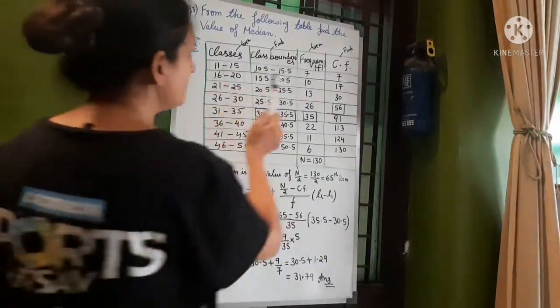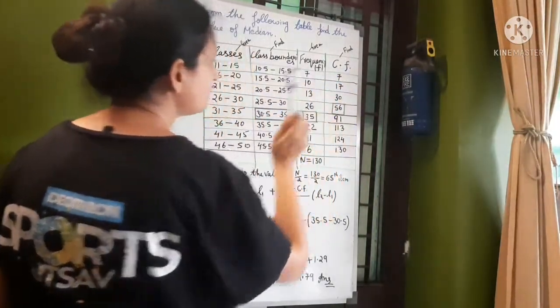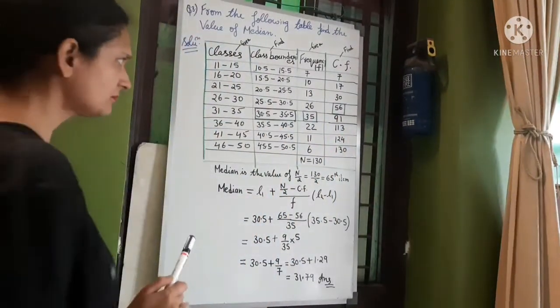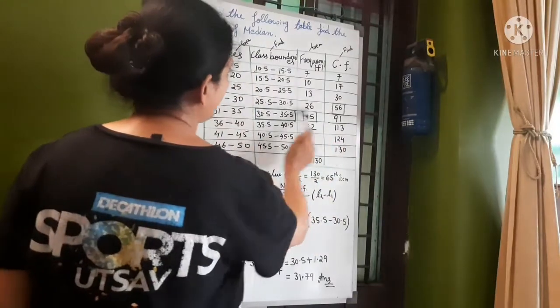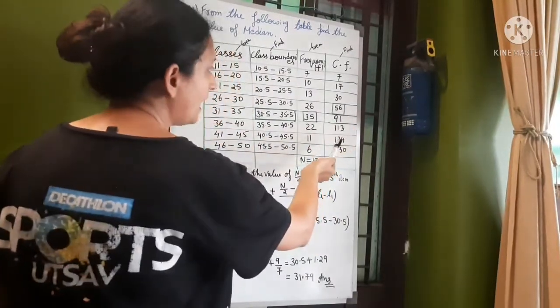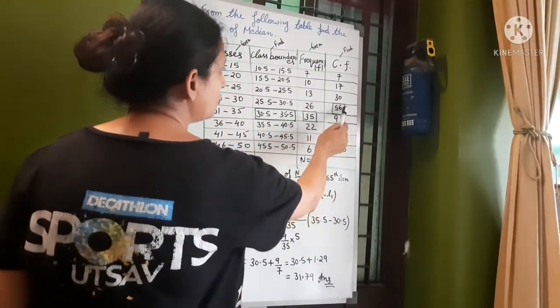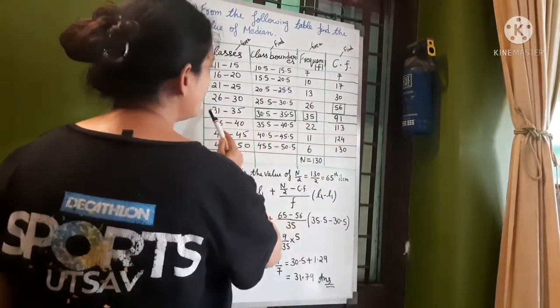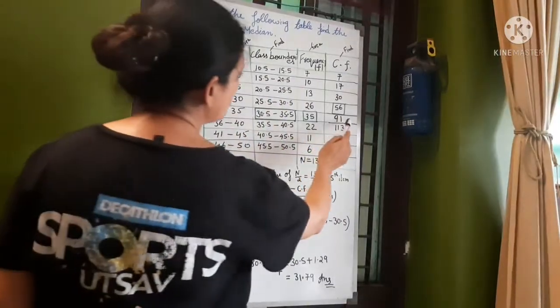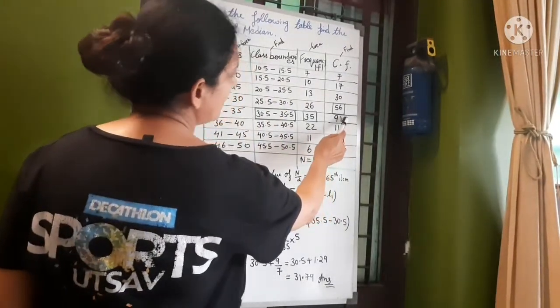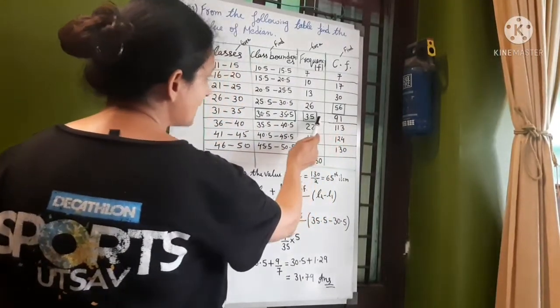Cumulative frequency we can see where is 65th here. Now see 65th here is, 56th is small and 91th is big. So now see cumulative frequency is 91th above here.